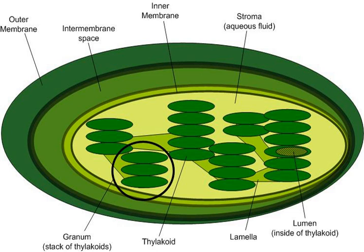Channel proteins called porins in the outer membrane allow free diffusion of ions and small proteins about 5,000 Daltons or less into the IMS.